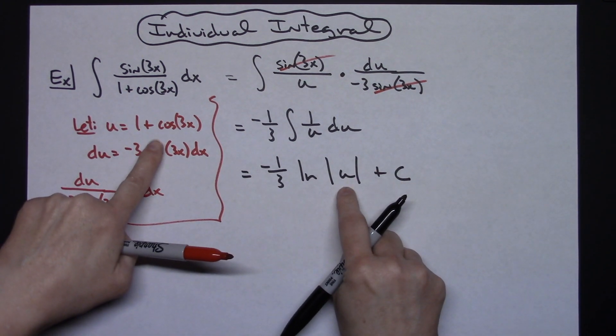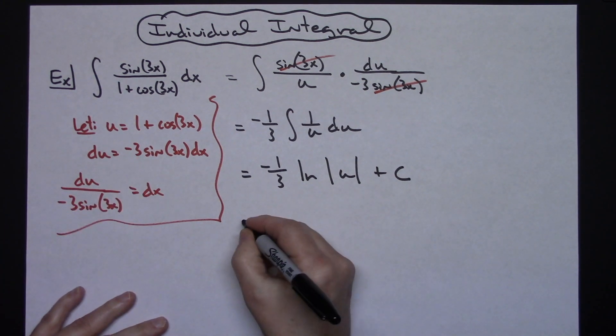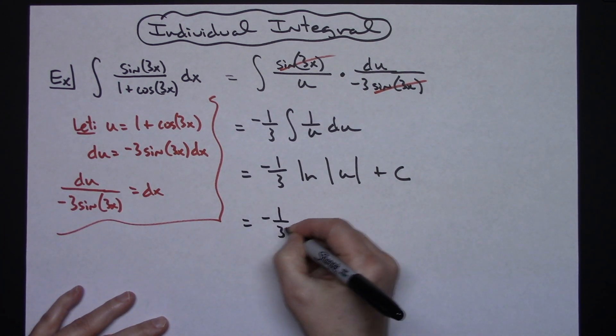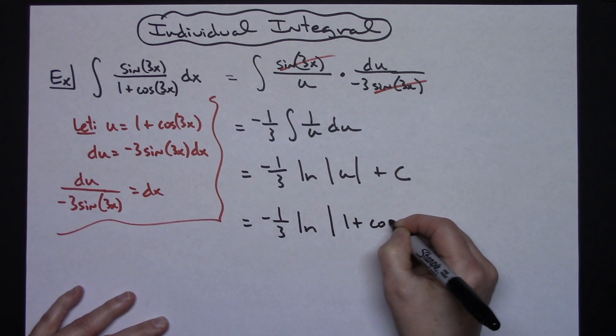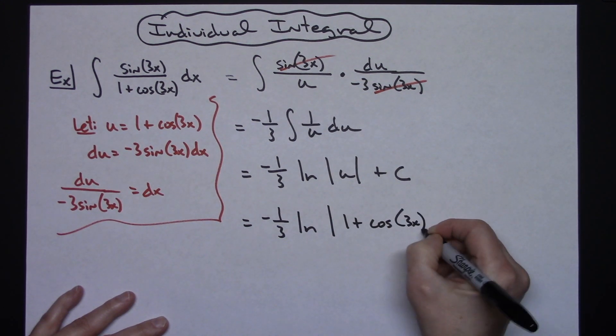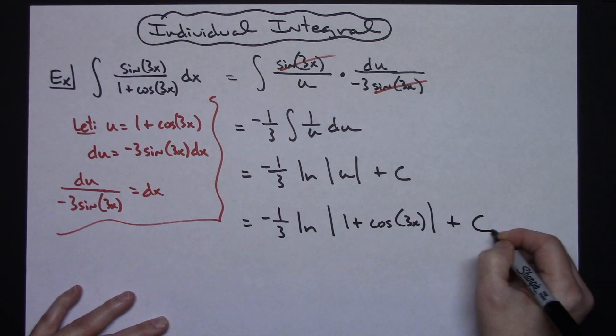Last step then is to replace that u with what we let it equal. So a negative 1/3 natural log absolute value 1 plus cosine of 3x and then plus c.